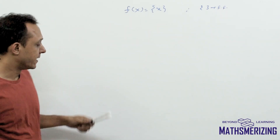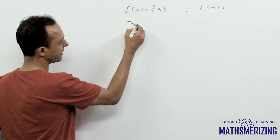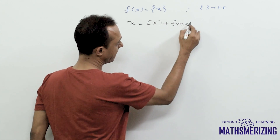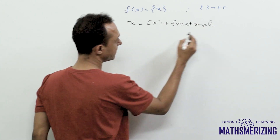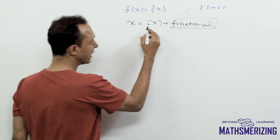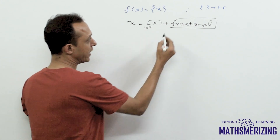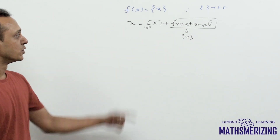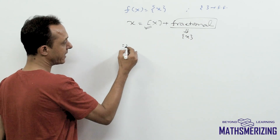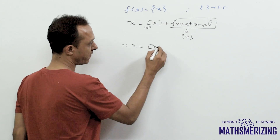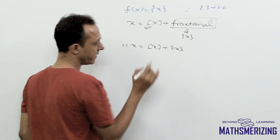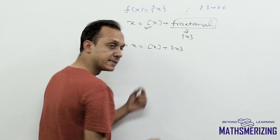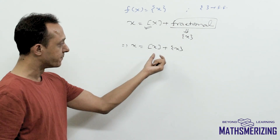We have already studied that I can express any number x as its integral part plus its fractional part. The integral part is the greatest integer function, and the fractional part is the fractional part function. So I can write any number x as the sum of its integral part plus its fractional part. We are interested in the decimal value which is positive and lies between 0 and 1.